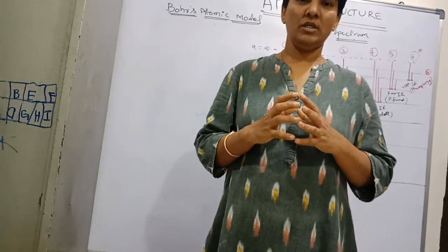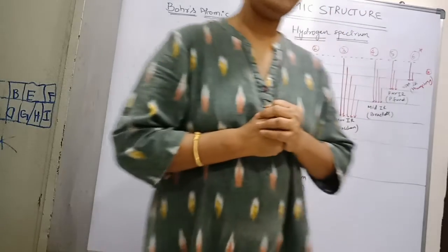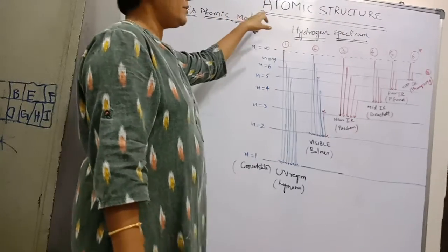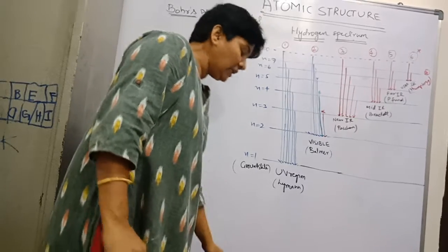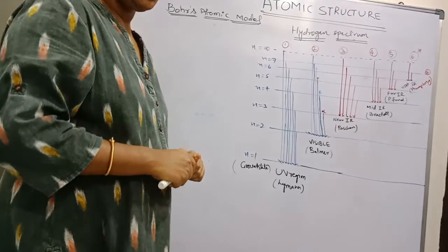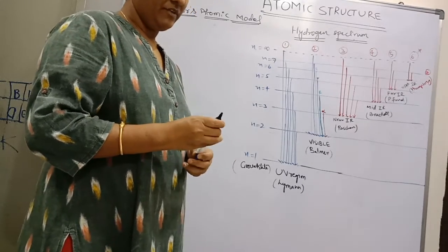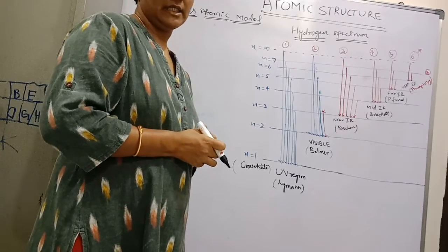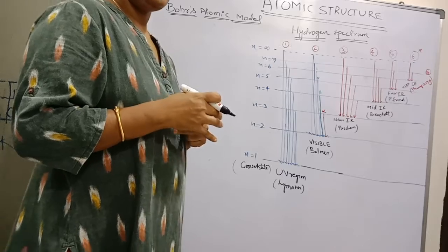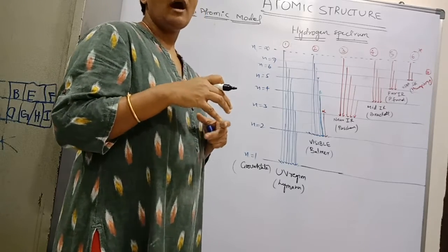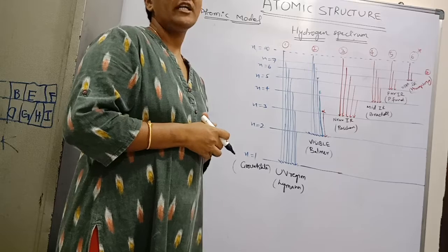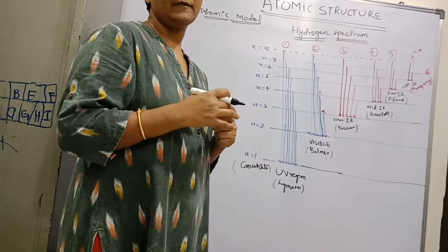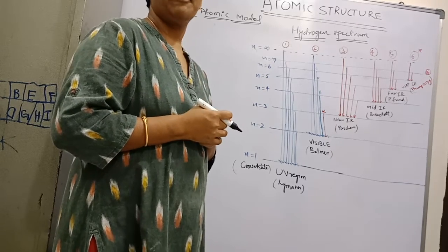So without wasting time, we are going to discuss point-to-the-answer type of questions. The very first topic in plus one intermediate first year is atomic structure, where you deal with the structure of an atom. In previous classes we have learned that the atom is made up of subatomic particles, and we learned about the arrangement of fundamental particles like protons, neutrons, and electrons in the atom. Different models were proposed by different people — such are called as atomic models.